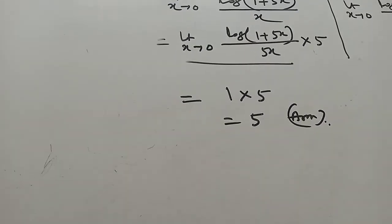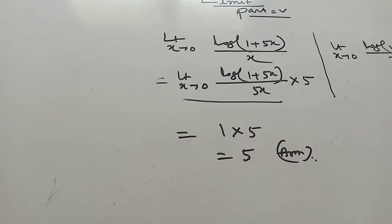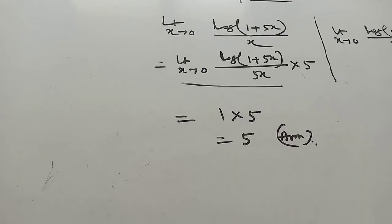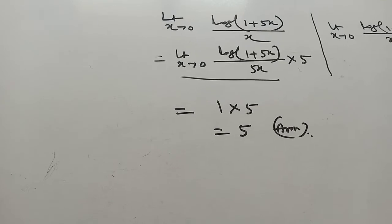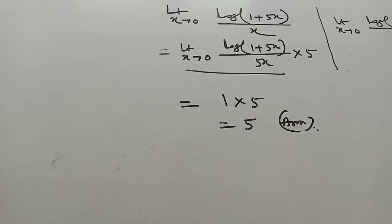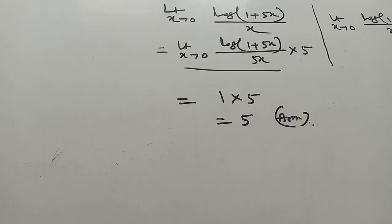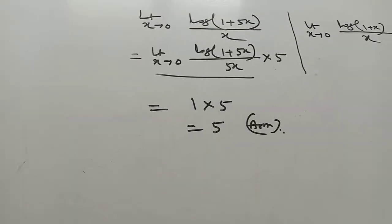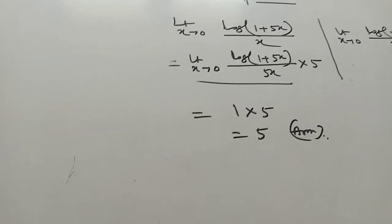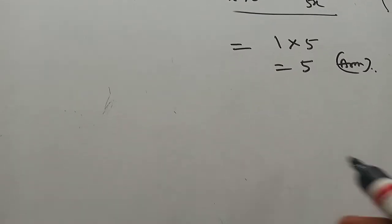That means limit as x tends to 0, log(1 plus 5x) by 5x. Then you can write it as log(1 plus 5x) by 5x times 5. By the formula, that means 1 times 5 equals 5. Second problem: